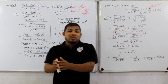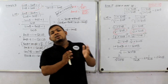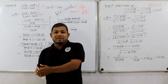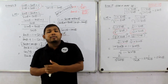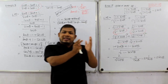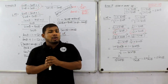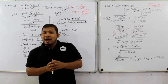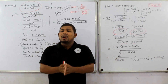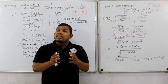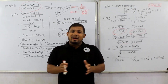We can express identities in terms of sin and cos. The trigonometric ratio allows us to go from left-hand side to right-hand side. I hope you enjoyed this video, and I'll see you in the next video.